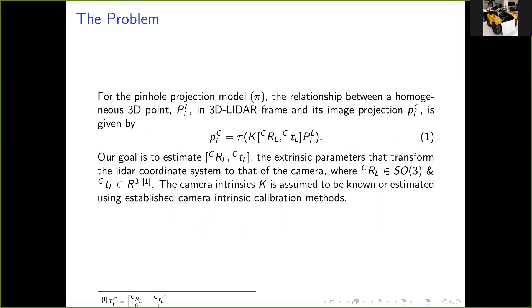For a pinhole camera model, Pi, the relationship between any points PLI iterated in a 3D LIDAR and its image position PCI is given in equation 1, which involves the extrinsic calibration parameters CRL and CTL. The goal of any LIDAR extrinsic calibration algorithm is to estimate these parameters. In this work, we assume that the intrinsic calibration parameters K and also the lens distortion parameters are known.